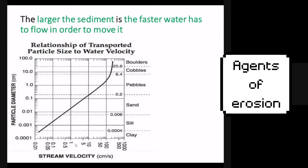A river moving at one centimeter per second, or an ocean wave, could only pick up mostly silt and clay. Whereas a river moving at 100 centimeters per second could pick up clay, silt, sand, and even pebbles. A river moving at 300 centimeters per second could pick up clay, silt, sand, pebbles, cobbles, and even boulders. So the more force a river has, the more sediment it can pick up.